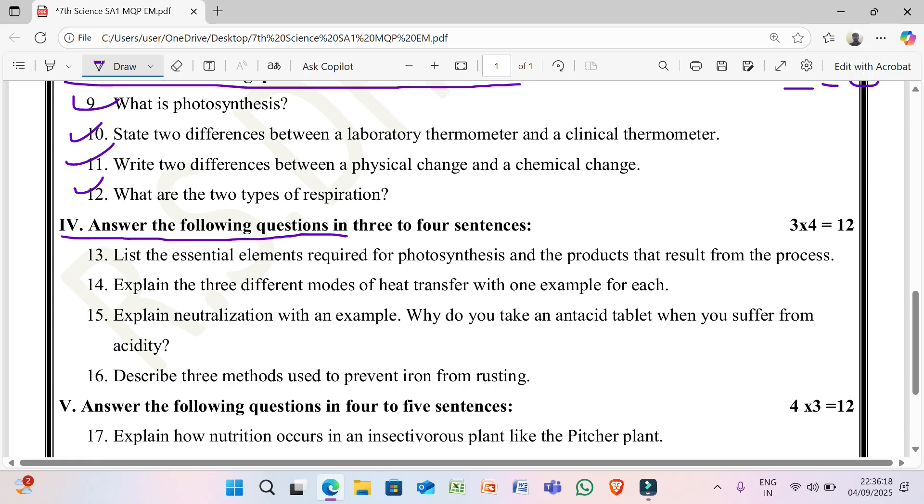13th question, answer the following questions in 3 or 4 sentences, total 4 questions, each question 3 marks, total marks 12. 13th question, list the essential elements required for photosynthesis and the products that result from the process. 14th question, explain 3 different modes of heat transfer with one example for each.